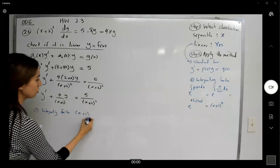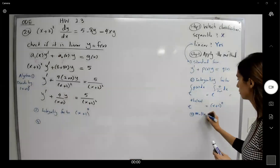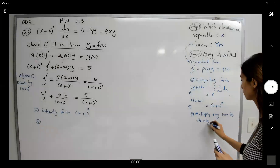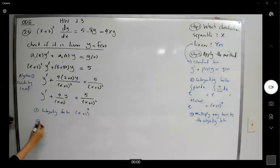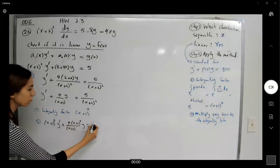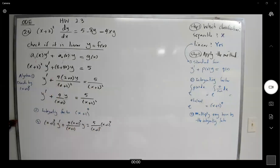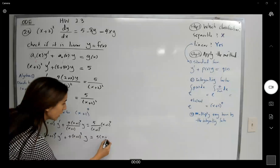The integrating factor is (x+2)⁴. Step 3: multiply every term by the integrating factor. So we get (x+2)⁴ times y′, plus 4/(x+2) times (x+2)⁴ times y, equals 5 times (x+2)² divided by (x+2)². Simplifying, we have (x+2)⁴ y′ plus 4(x+2)³ y equals 5(x+2)².